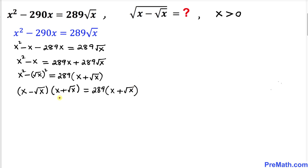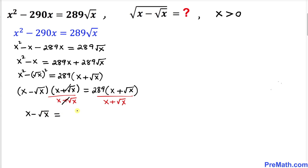Now let's go ahead and divide both sides by x plus square root of x. We can see that x plus square root of x cancels on both sides. So we end up with x minus square root of x on the left hand side equals to 289 on the right hand side.